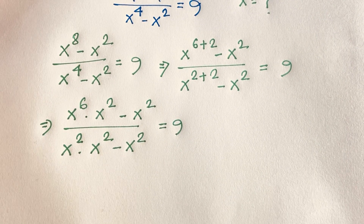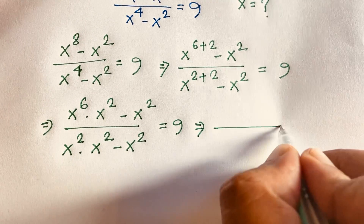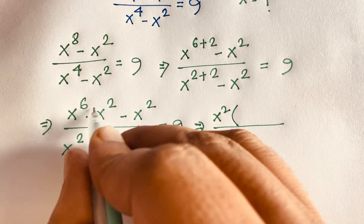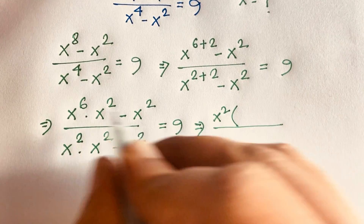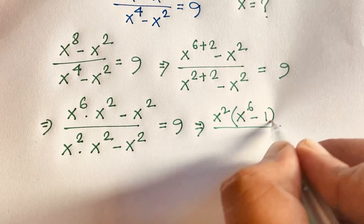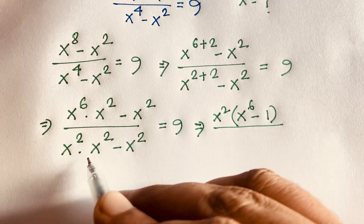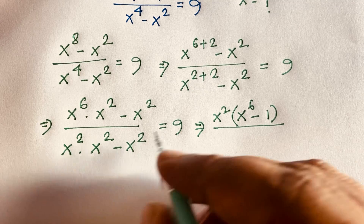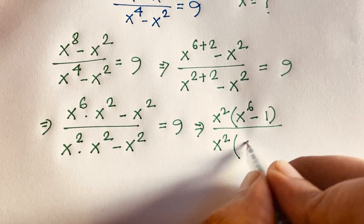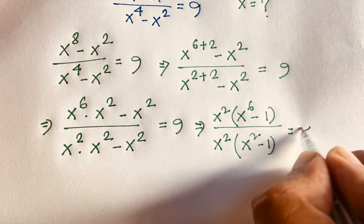Now I can see that x squared is common in the numerator, so dividing gives x to the power 6 minus 1. And in the denominator, x squared is common, giving x squared minus 1, equal to 9.